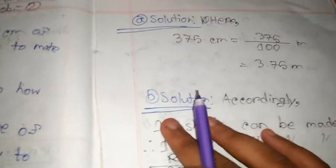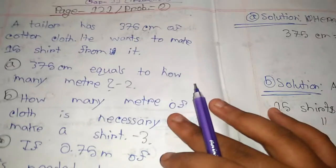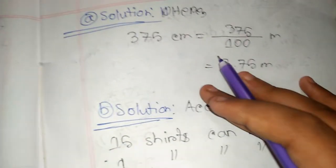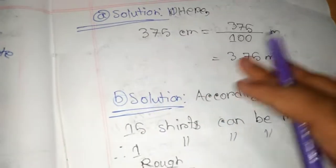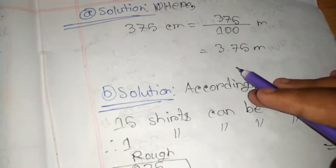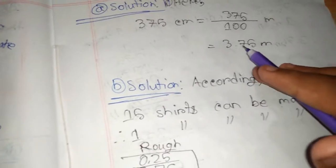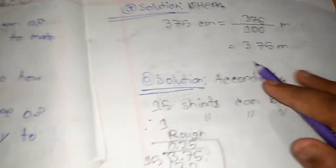Here is the solution to question A. The question was: 375 cm equals how many meters? We know 100 cm equals 1 meter, so 375 cm equals 375 divided by 100, which equals 3.75 meters. Therefore, 375 cm equals 3.75 meters.